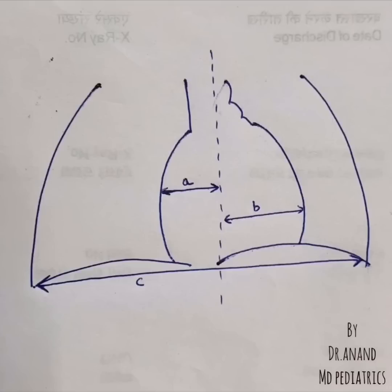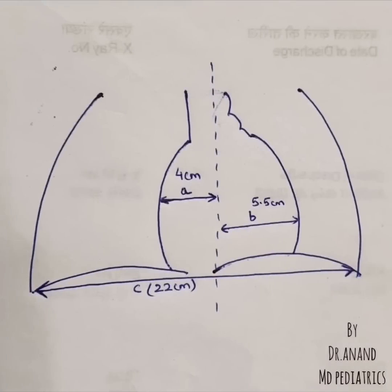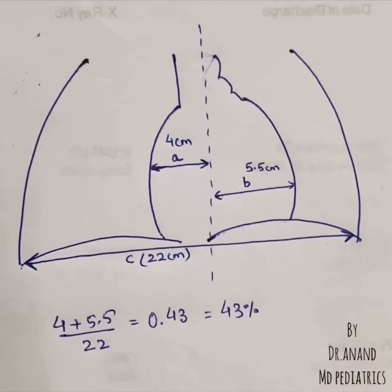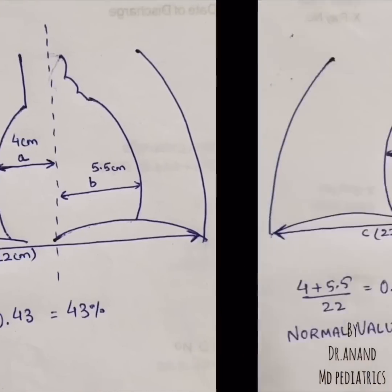How do you calculate A plus B divided by C? In our patient, A was 4 cm, B was 5.5 cm, and C was 22 cm. Once calculated, it came out to be 0.43, or 43%.